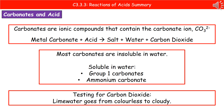The general word equation for this reaction is: metal carbonate plus acid makes three things — salt, water, and carbon dioxide. The name of the salt comes from the metal carbonate: the metal name first, then look at the acid for the second part. Hydrochloric acid makes chloride, sulfuric acid makes sulfate, nitric acid makes nitrate, and phosphoric acid makes phosphate.